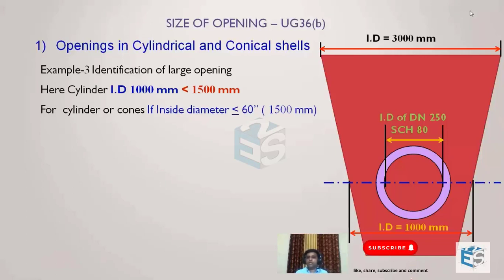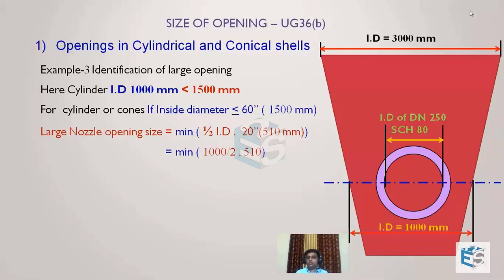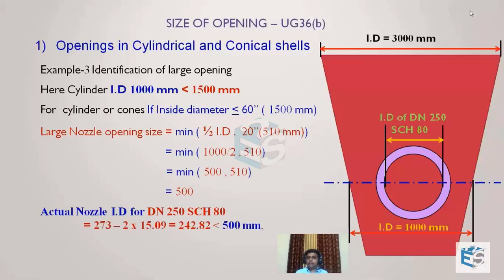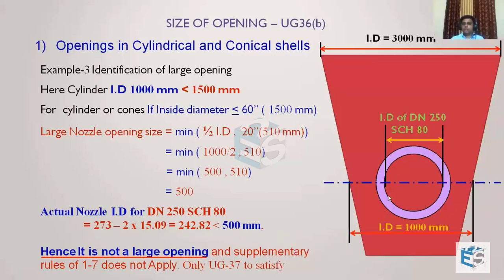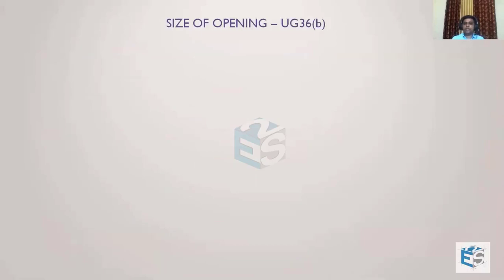Since 1000mm is less than 1500mm, the same criterion applies: minimum of half the diameter (500mm) or 510mm = 500mm. The DN250 nozzle ID (242.82mm) is less than 500mm, so it is not a large opening. To summarize: for conical shapes, always use the diameter of the cone at the centerline of the nozzle opening for the large opening identification calculation.